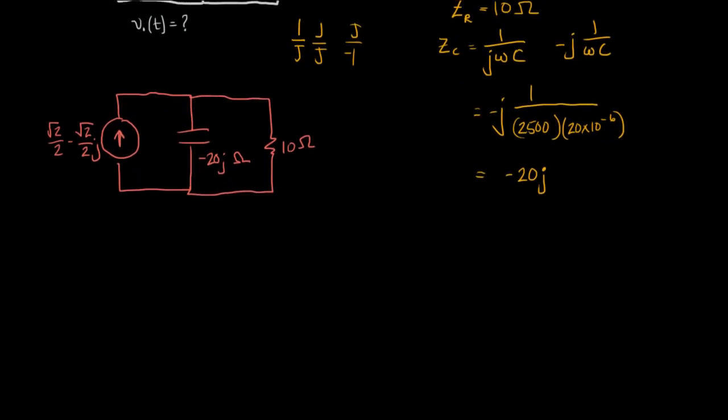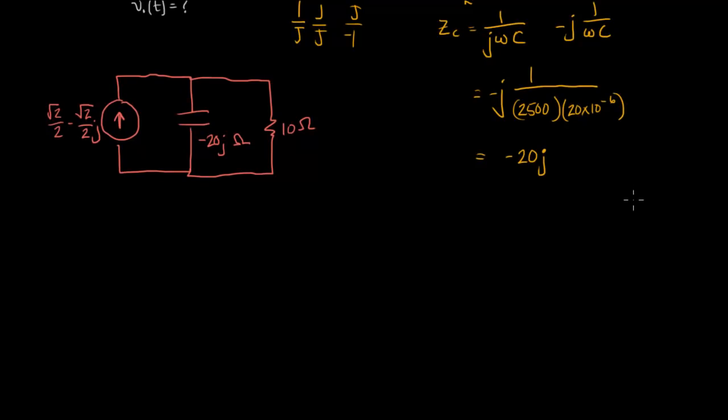So, just to prove that, it would be really simple to solve this by doing a source transformation. We've got a current source and a resistor, essentially, in parallel. So let's convert them into a voltage source and a resistor in series, and then we can just do voltage division to find this voltage, which is what we're looking for. V across here. Okay, so to do a source transformation, we are going to multiply this current times this resistance, or impedance, and that will give us the voltage source. So, let's just redraw the circuit, and then we'll calculate the values.